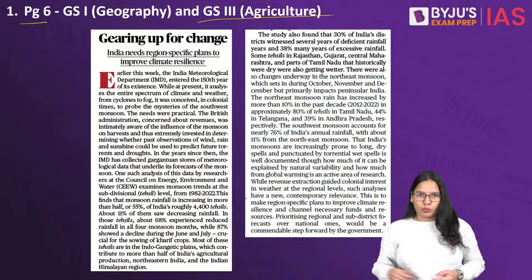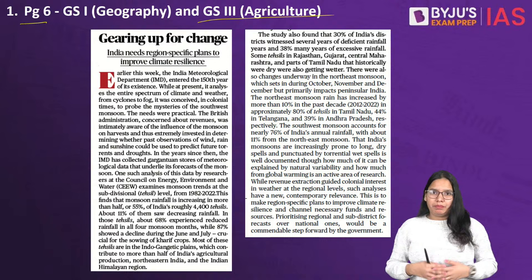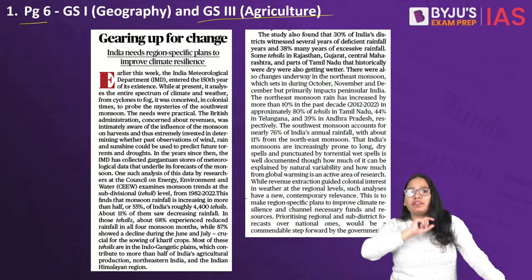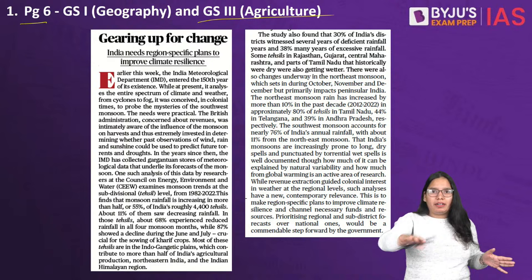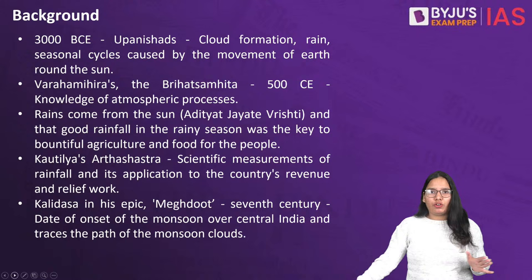The article is titled 'Gearing Up for Change.' The basic context is that IMD — the Indian Meteorological Department, established by British authorities — analyzes weather patterns, climate patterns, and rainfall patterns. Rainfall patterns are very important for understanding agricultural seasons, because if you know the rainfall pattern, farmers will know when to sow or reap benefits from agriculture.